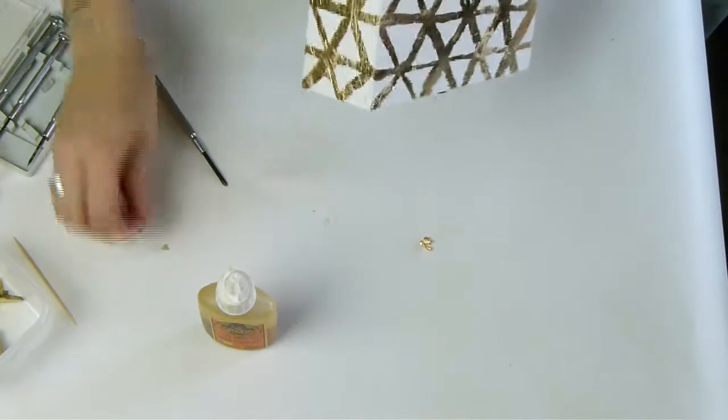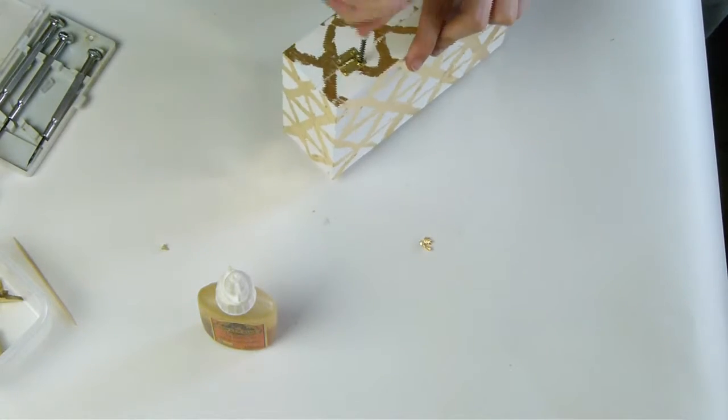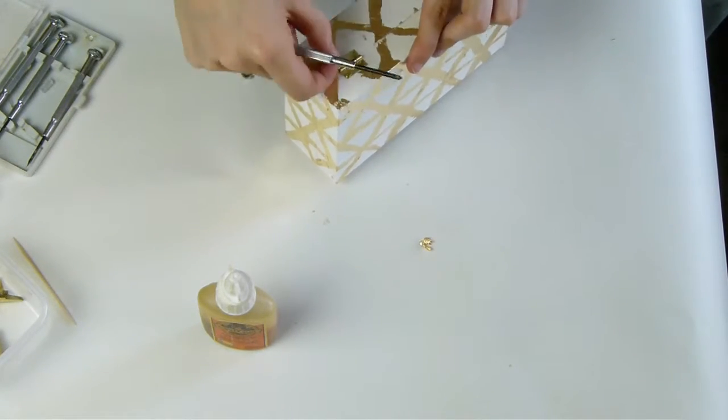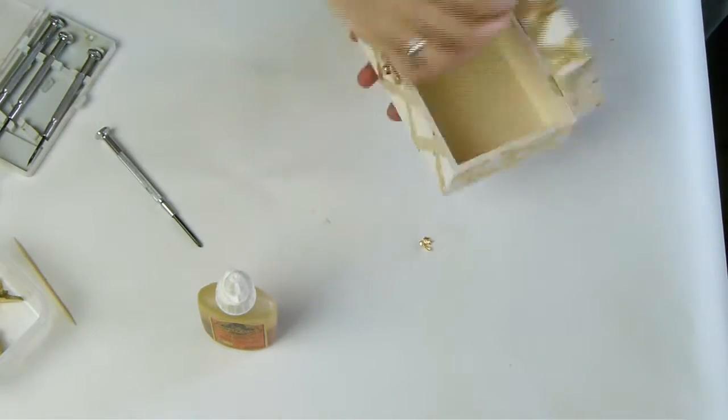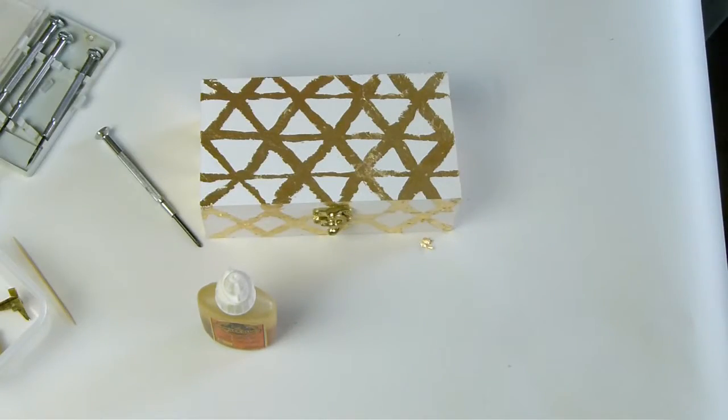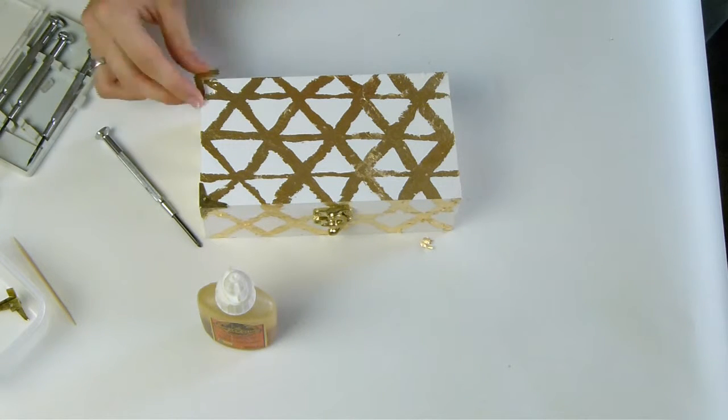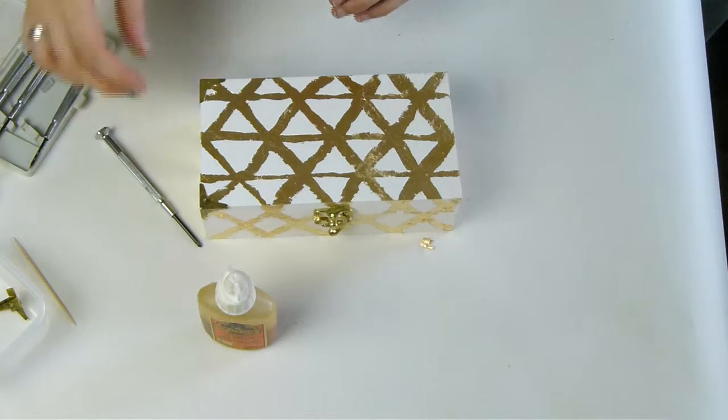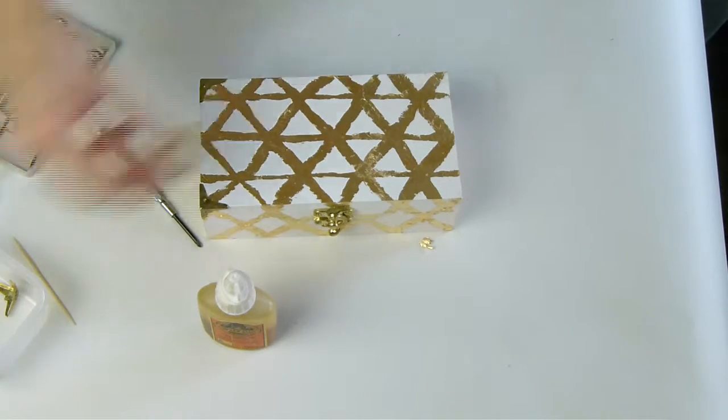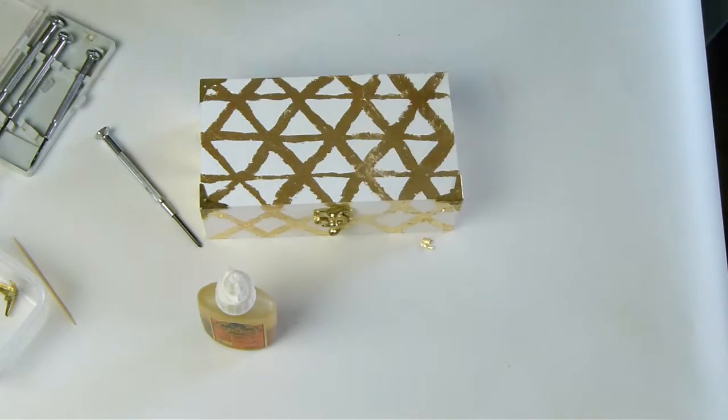Once you've completely gold leafed all of your box and it's completely dry, you can then finish up by screwing all the hardware back on. So that was the front fastening and the hinges, and then I stuck my corner brackets back on with a little dab of Gorilla Glue as well.